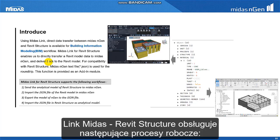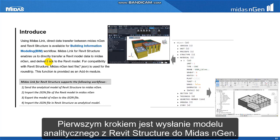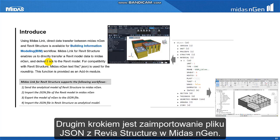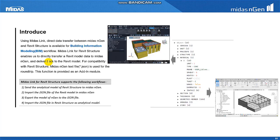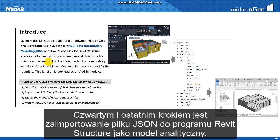Midas Link for Revit Structure supports the following workflows. The first step is to send the analytical model of Revit Structure to Midas Engine. The second step is to import the JSON file of the Revit model in Midas Engine. The third step is to export the model from Engine to the JSON file. The final step is to import the JSON file in Revit Structure as an analytical model.